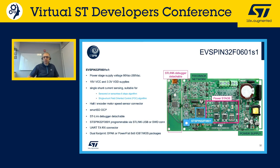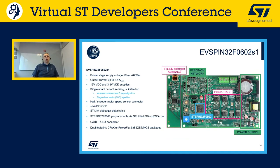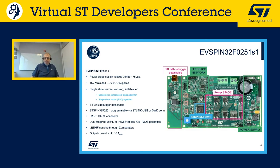The EVSPIN32F0601S3 has three shunt resistors and the power stage supply voltage can range from 50V to 280V AC. The EVSPIN32F0602S1 has a single-shunt configuration with dual footprint for either MOSFETs or IGBTs. The EVSPIN32F0251S1 is also single-shunt with dual footprint for IGBTs or MOSFETs, supports loads up to 16A, and has a detachable ST-Link.